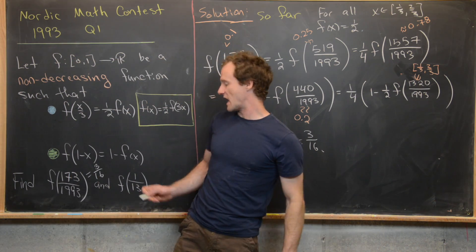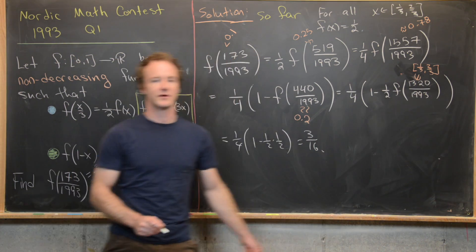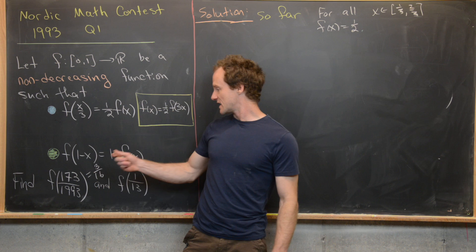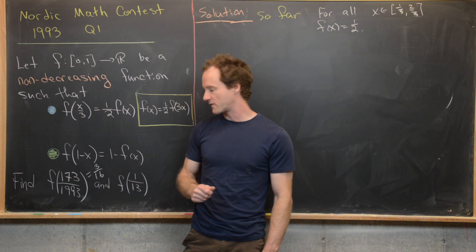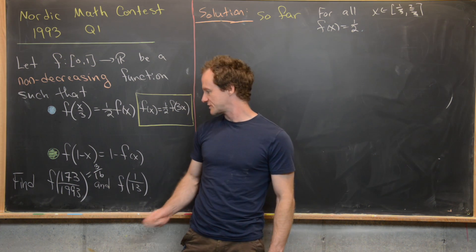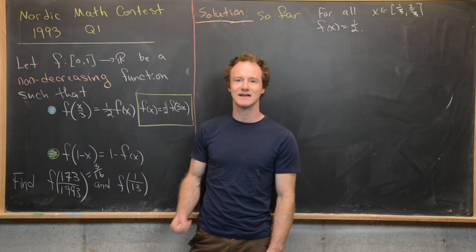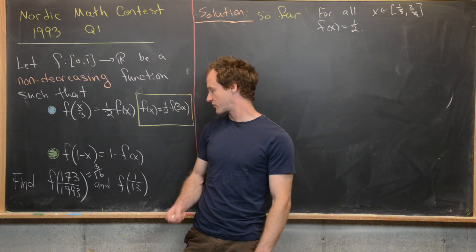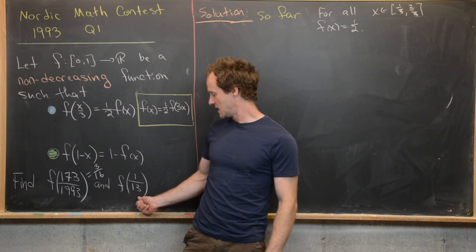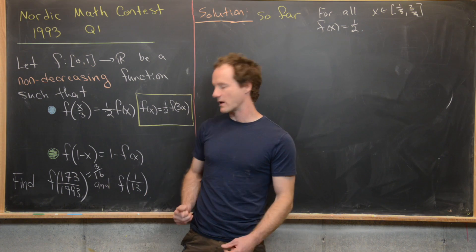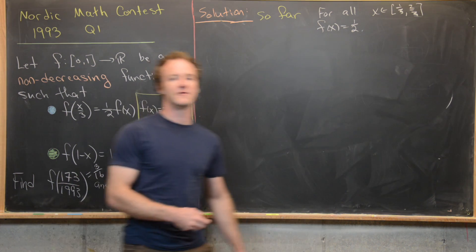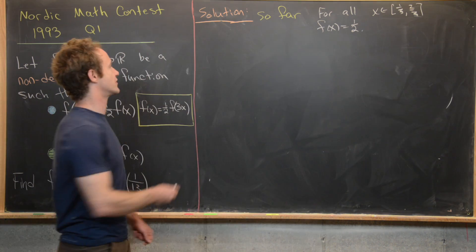So we've calculated our first value: f(173/1993) = 3/16. Now we'll work on f(1/13).